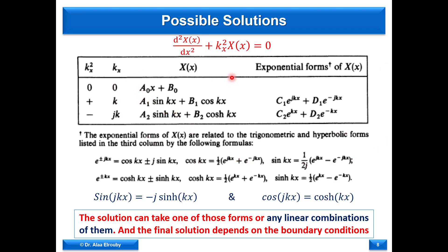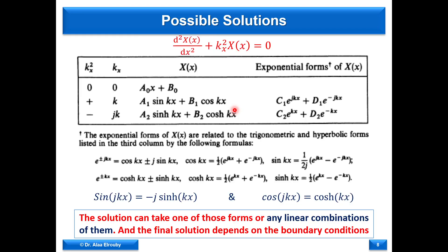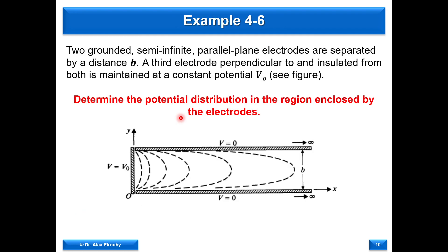Since we don't deal with hyperbolic functions frequently: we know the exponential e^(-KX) and e^(+KX); the cosh function and the sinh function look as shown. In all cases, the solution depending on the values of K_X squared, K_Y squared, K_Z squared must be a combination of those three possible cases, as we will see from the example.